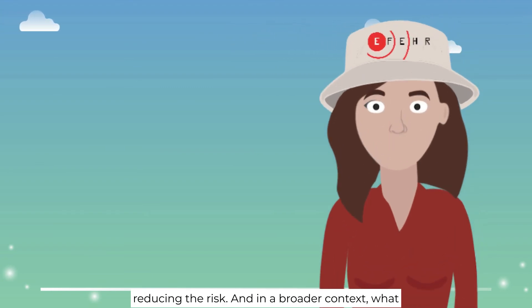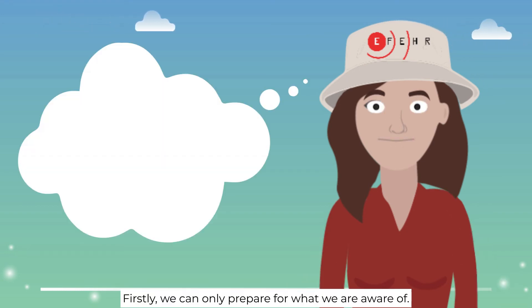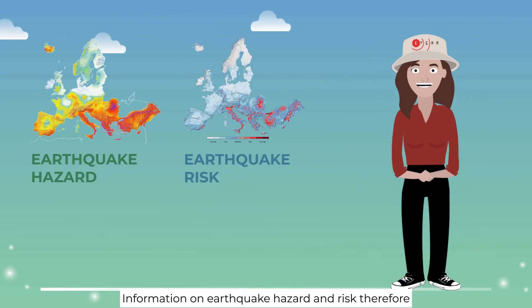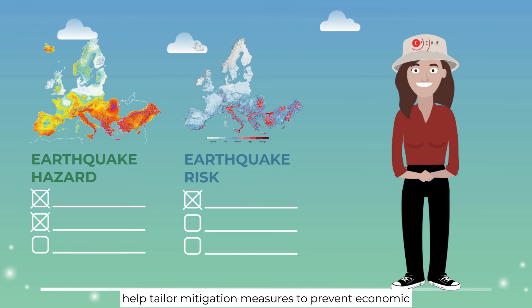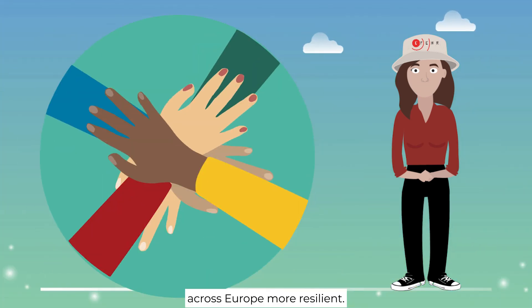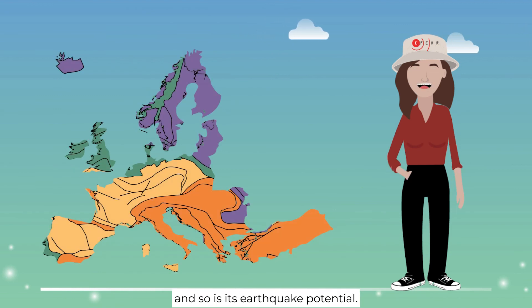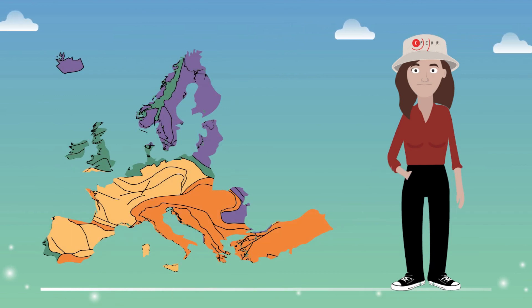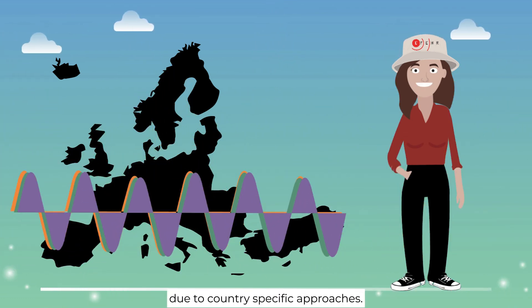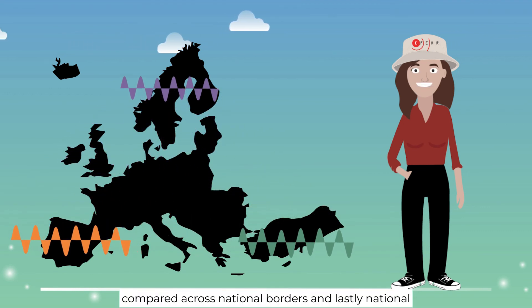And in a broader context, what are the benefits of these new models? Firstly, we can only prepare for what we are aware of. Information on earthquake hazard and risk therefore helps tailor mitigation measures to prevent economic and human losses and, consequently, make communities across Europe more resilient. Secondly, Europe is highly tectonically diverse and so is its earthquake potential. Our models have been developed with a harmonized approach and thus help remove differences due to country-specific approaches, so hazard and risk information can be compared across national borders.